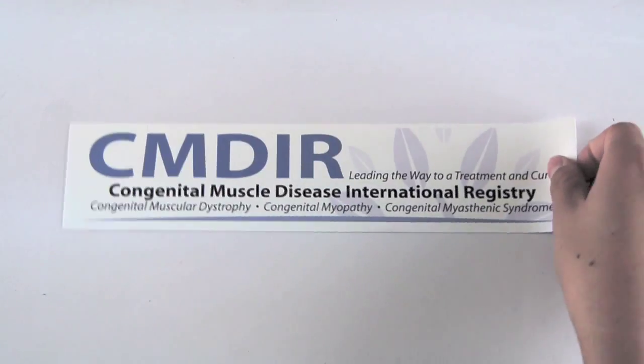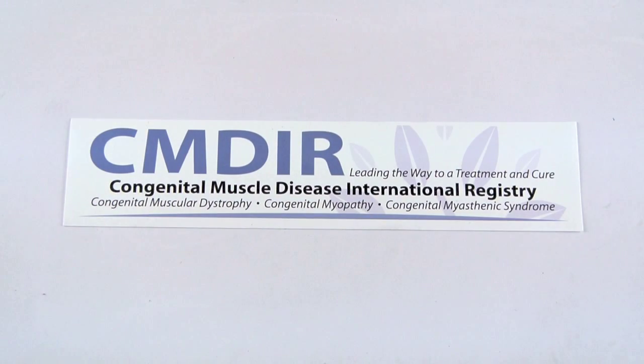Registries are an important way to count and identify people and families with a specific health condition. The CMDIR gathers current contact information and health information. The information is collected, stored, and shared with researchers in a way that ensures your privacy.